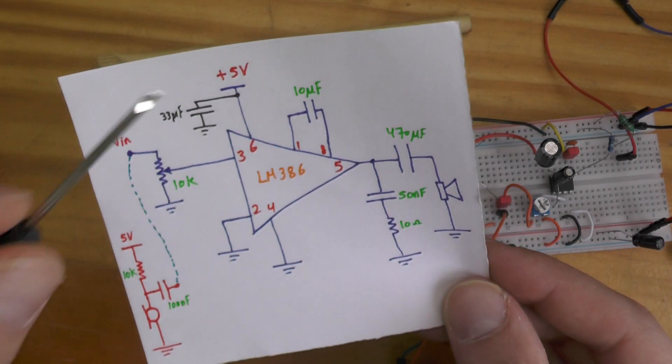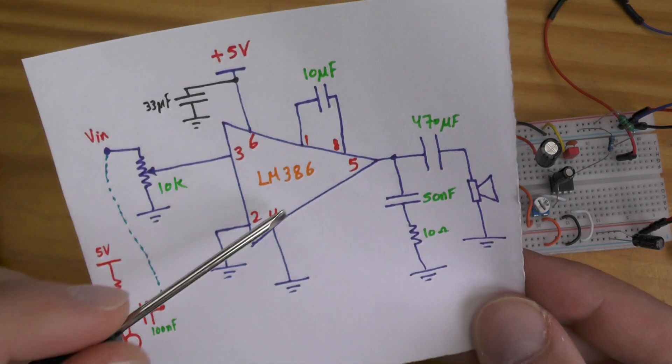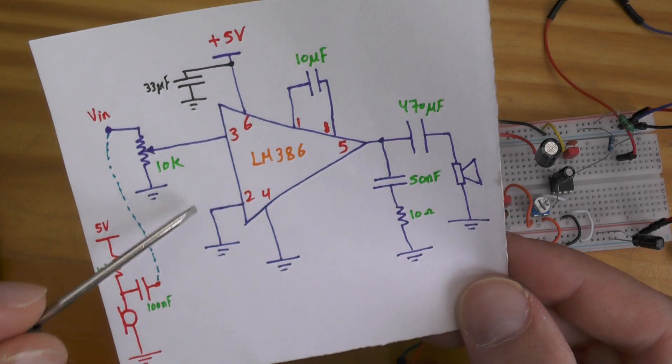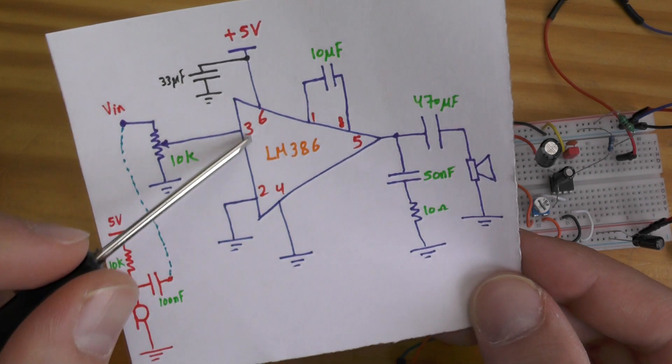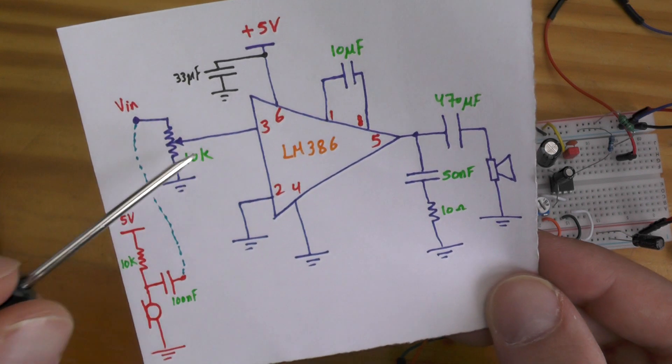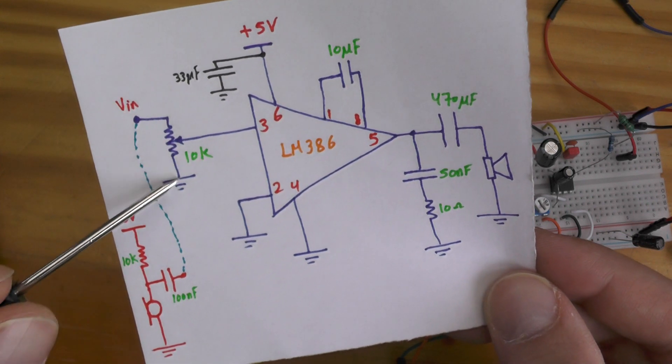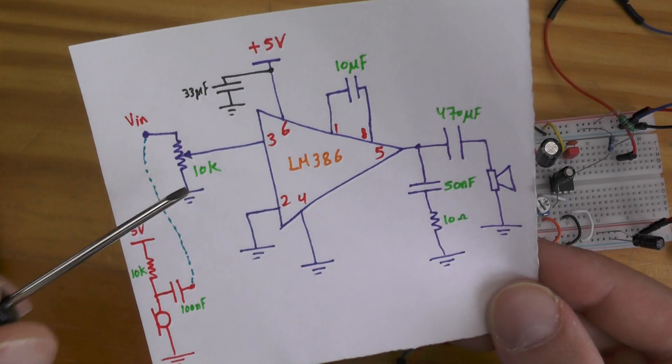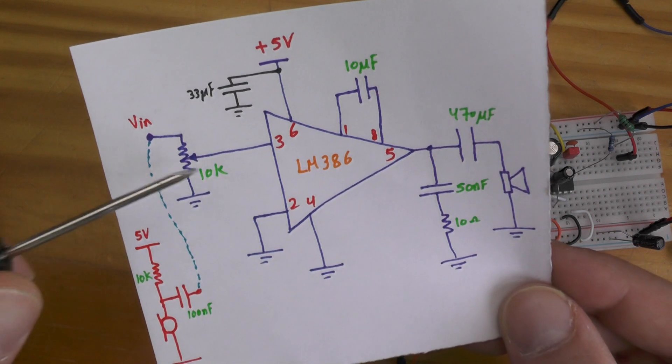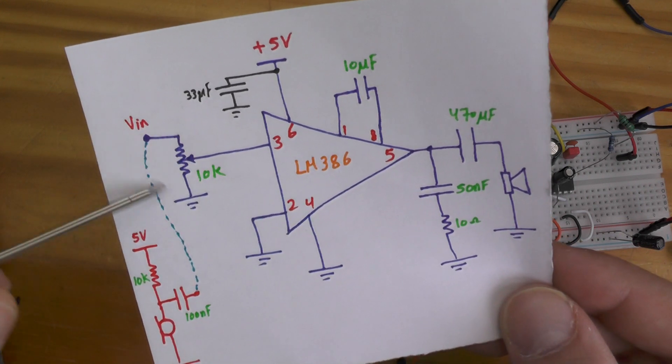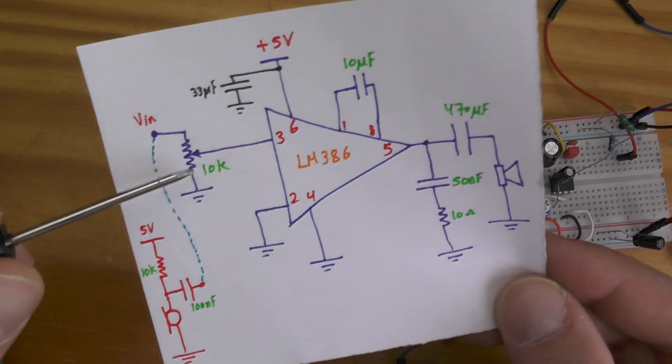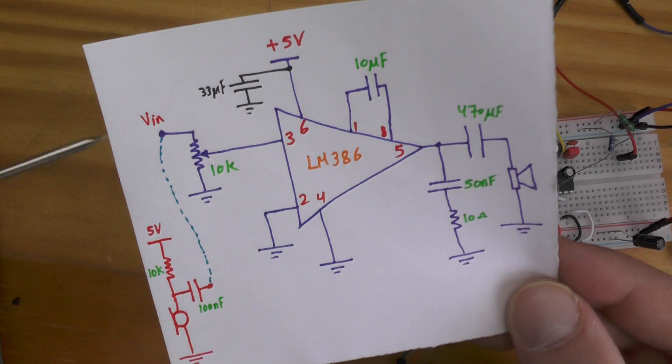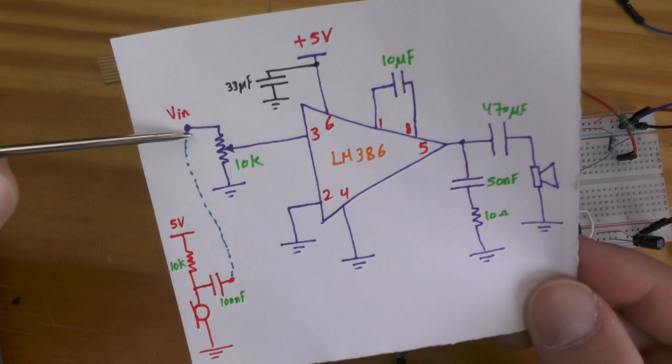It's going to pin number 6. Pin number 4 is the ground. We have two inputs here: pin number 2 is the inverting input, it's grounded. Pin number 3 is the non-inverting input, going to a potentiometer with 10 kilo ohm. This potentiometer can control the sound volume and also you can control maybe noise cancellation if it's saturated.